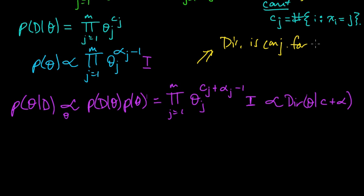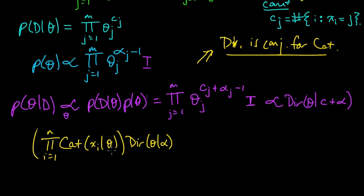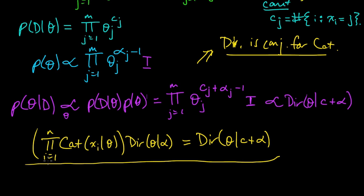So the beautiful thing here is that we can get the posterior in closed form. We can write this as: a product of categorical distributions for x_i, i from 1 to n, given theta, times a Dirichlet over theta given alpha — the Dirichlet absorbs the categoricals — equals a Dirichlet over theta with parameter c plus alpha, where c is the count vector. The categoricals get absorbed into the Dirichlet, and this is a nice little formula to remember.